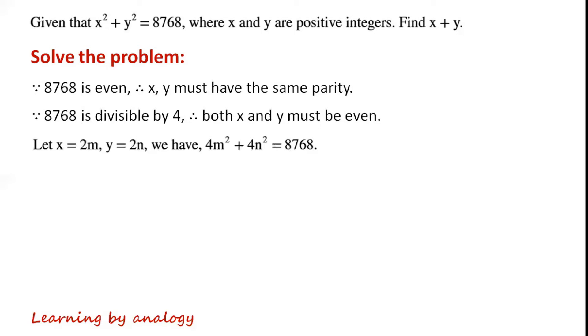Let x equal 2m, y equal 2n. We have 4m squared plus 4n squared equals 8768. So m squared plus n squared equals 2192.